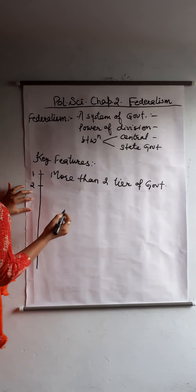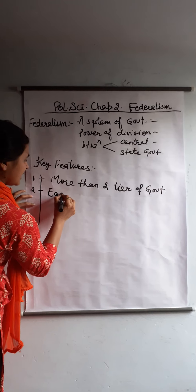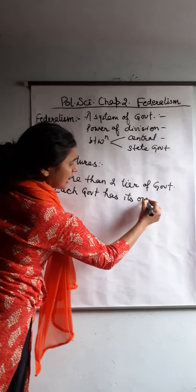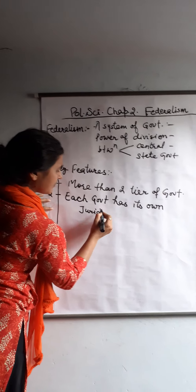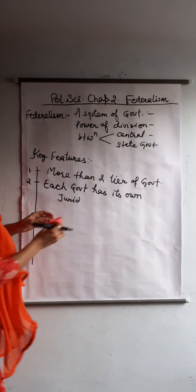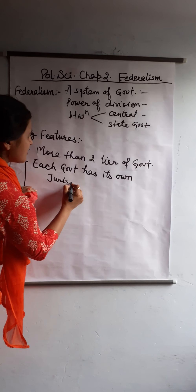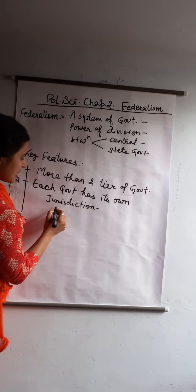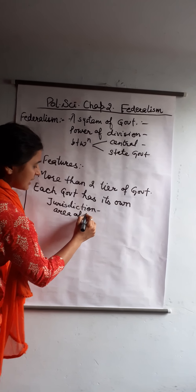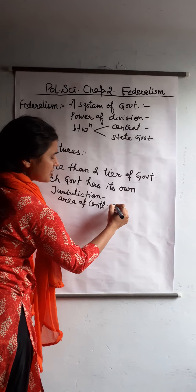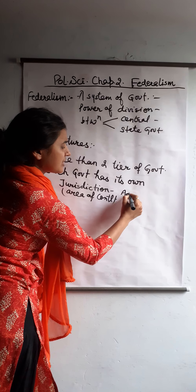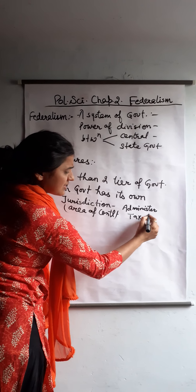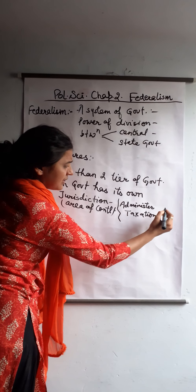The second key feature is that each government has its own jurisdiction. What is jurisdiction? Jurisdiction means the sphere of control — where they are administered and where they are taxed.